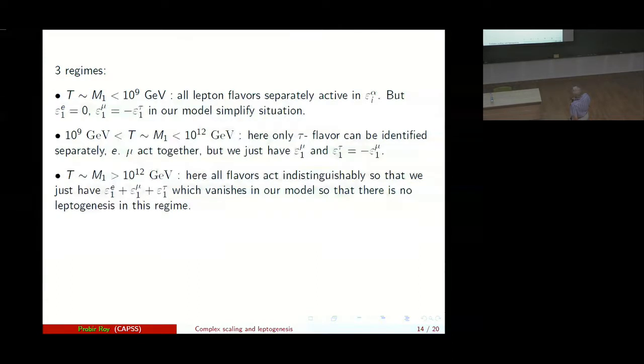So the situation is very simple. Or you can have the temperature between 10 to the 9 GeV and 10 to the 12 GeV, M_1 itself being that. And here only the tau flavor can be identified separately and mu and e. But we just, since E is 0, we just have epsilon_1_mu and epsilon_1_tau which is equal to minus epsilon.